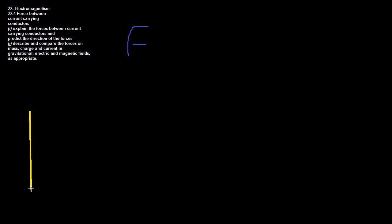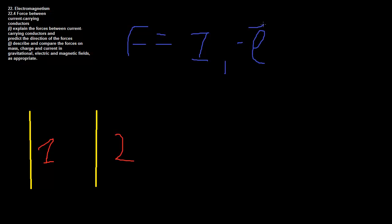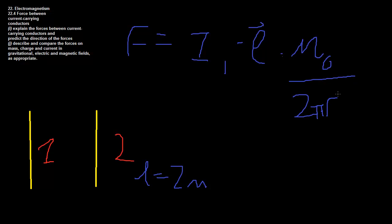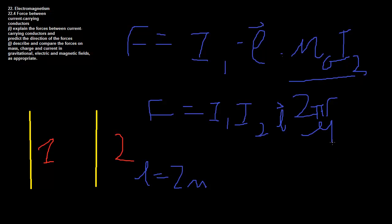Combining the two formulas for wire 1 and wire 2, the force equals I₁ times the exposed length L times B, where B = μ₀I₂/2πr. This gives us: F = I₁ · I₂ · L · μ₀ / (2πr). For an example, let L = 2 m, I₁ = 1 A, I₂ = 2 A, and the distance between the wires r = 2 m.